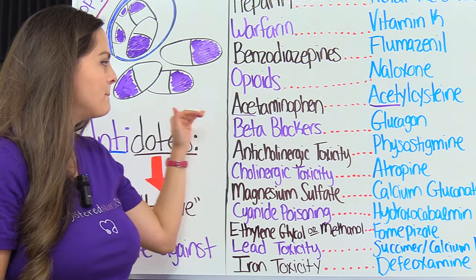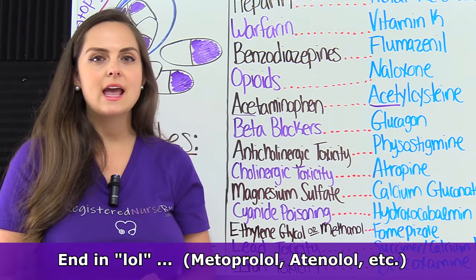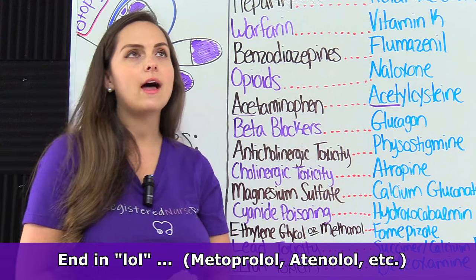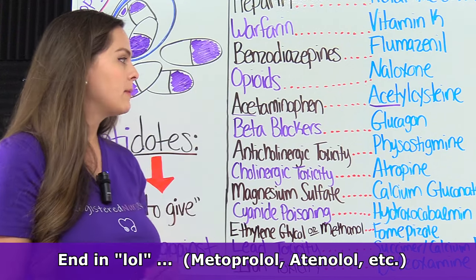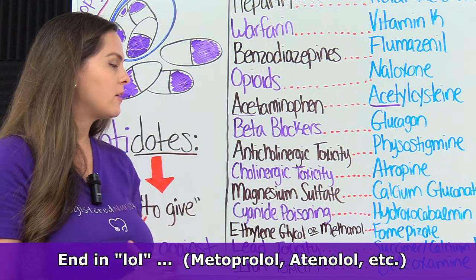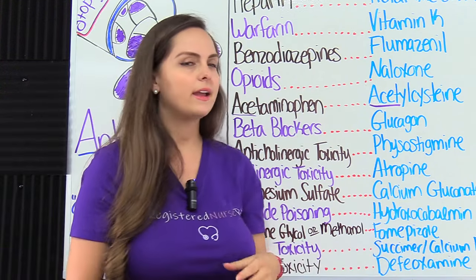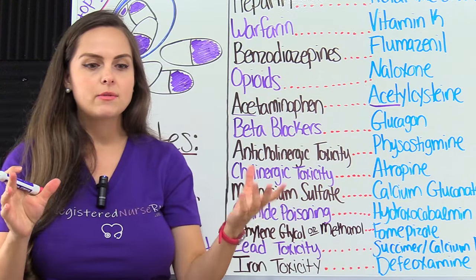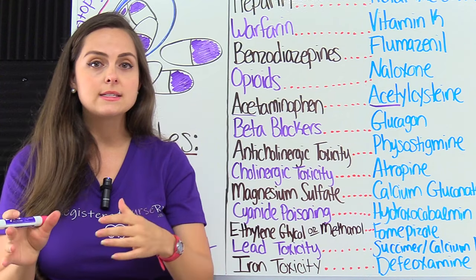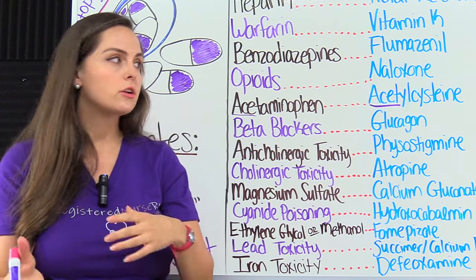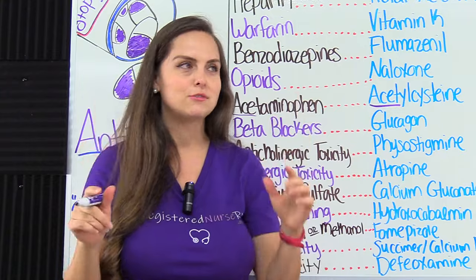Then we have beta blockers. These are cardiac medications that end in -LOL, like metoprolol or atenolol. If a patient gets too much of that on board — toxicity — we can give them glucagon. How I remember that is that beta blockers mask hypoglycemia, so glucagon, like glucose — that's how I keep those two straight.